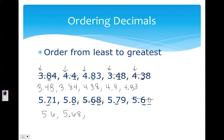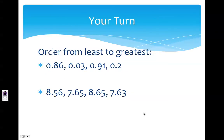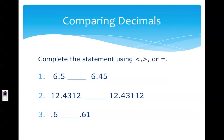Next would be 5.68 — mark it out. Then I look back at the tenths place: I have seven, eight, and seven. Seven is smaller, but I have two of those, so I have to look at the hundredths place. One is smaller than nine, so 5.71 is the next number — cross it out — then 5.79, and finally the only one left is 5.8. Now it's your turn: pause the video and complete the next two by ordering from least to greatest.